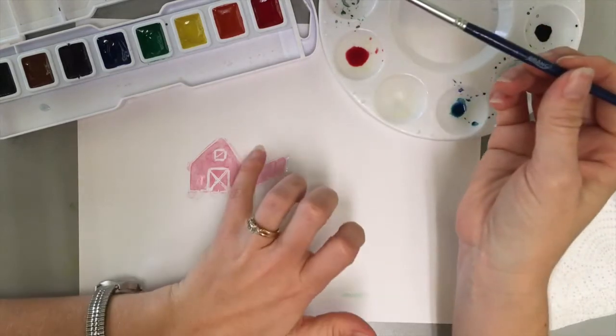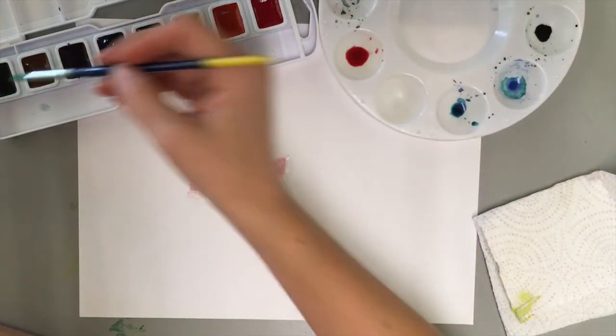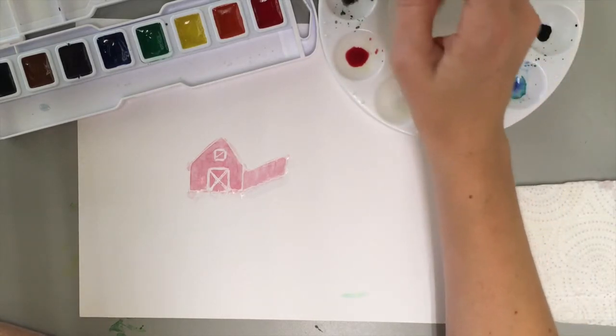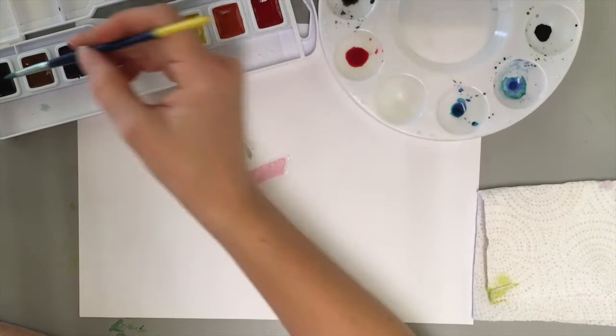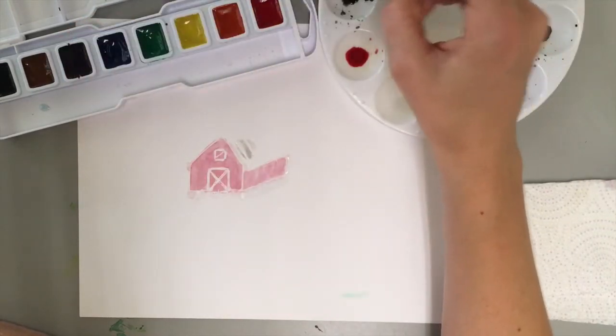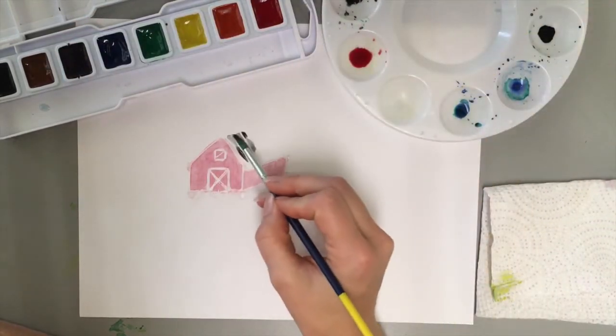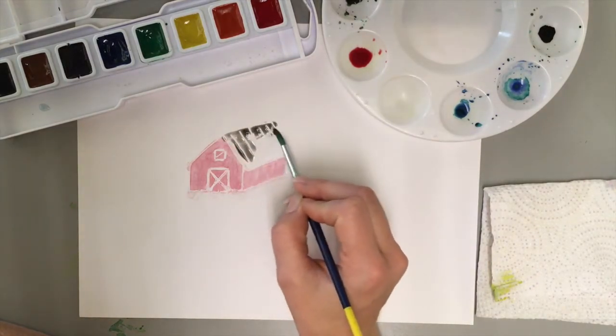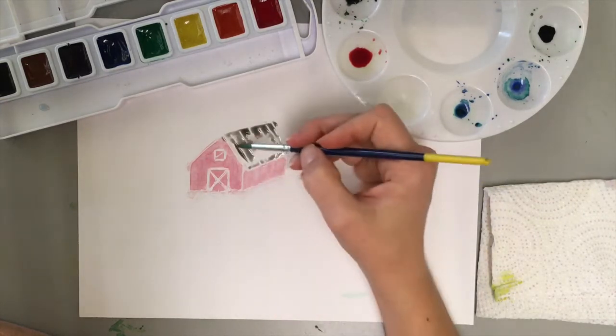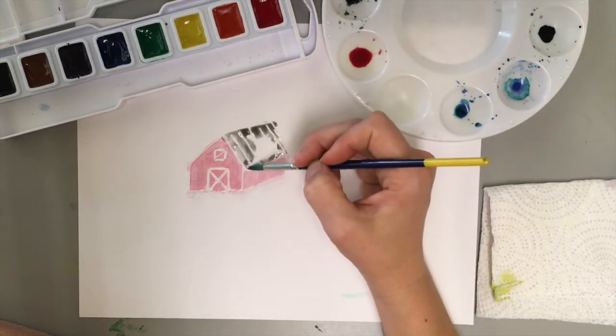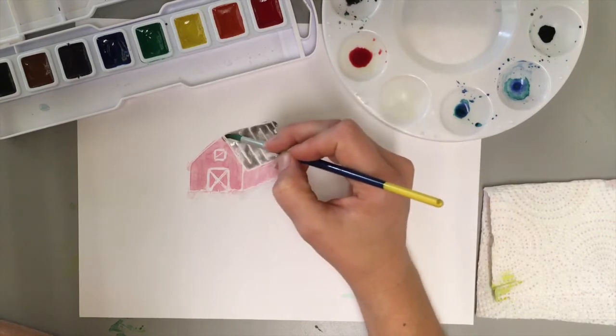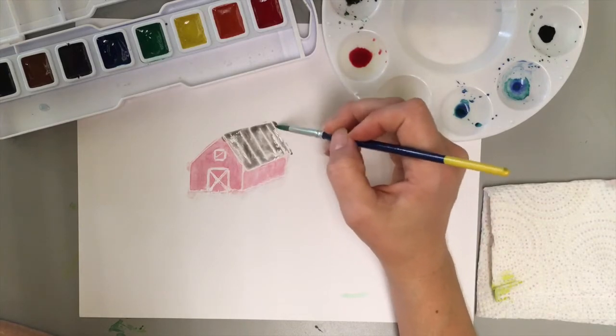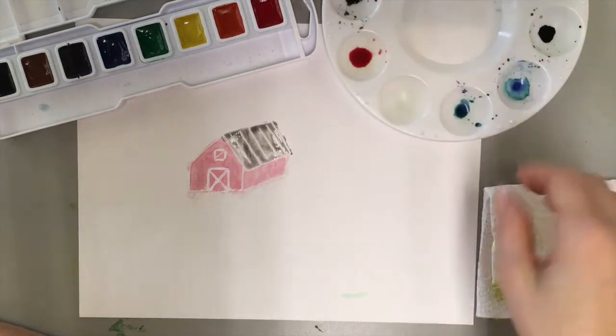I want to make a tin roof so that's kind of a black color mixed with water to make a gray. Let's make it a little bit darker. There I went outside the lines again, that's okay.